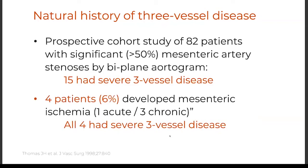With three-vessel high-grade stenosis or occlusion, that's a different story — though the truth is we don't really know the right answer. A small prospective study by Thomas of 82 patients identified 15 with severe three-vessel disease; four of those over a median follow-up of three years developed mesenteric ischemia, one of which was acute. If the patient is from a remote location or has difficult access to medical care and has a suitable lesion, I lean toward offering prophylactic revascularization for this category of severe high-grade three-vessel disease, acknowledging it is very controversial.